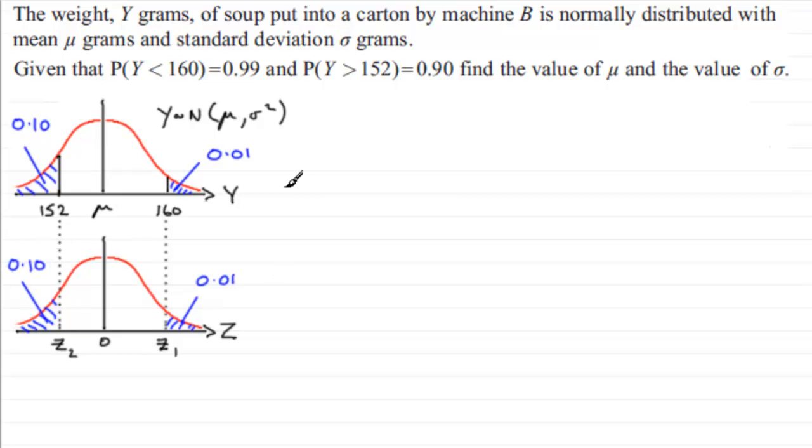Now, questions like this involve working backwards through your tables. We should be familiar with the transformation that takes any observed value from this graph to the Z values here. We should be aware that any Z value is equal to the observed value up here, which we call Y in this case, minus the mean, mu, all divided by the standard deviation, sigma.